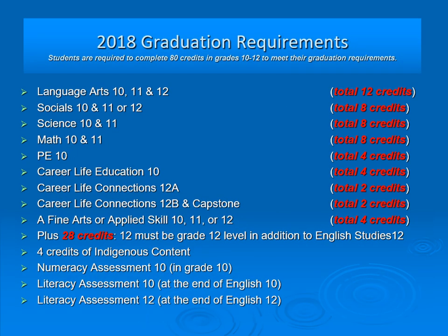The BC Ministry of Education has specific graduation requirements. They are: Language Arts — English 10, 11, and 12; Social Studies 10 and 11 or 12; Science 10 and 11 or 12; Math 10 and 11 or 12; PE 10; Career Education 10; Career Life Connections 12A; Career Life Connections 12B; and a Capstone.